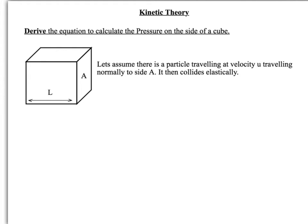First of all, deriving an equation to calculate the pressure on a side of a cube. We've got a cube with side length L and a surface we're going to investigate which has area A. We're going to assume a particle is travelling normally to side A — coming in perpendicular — and that it collides elastically, starting off travelling at speed U.